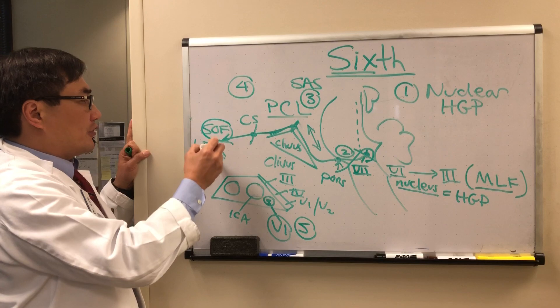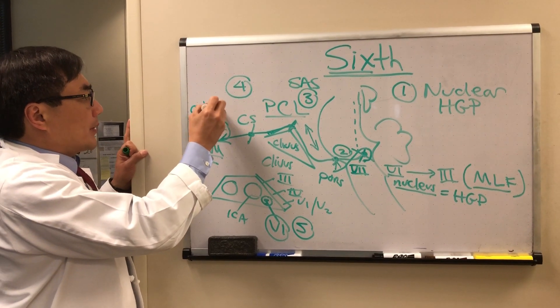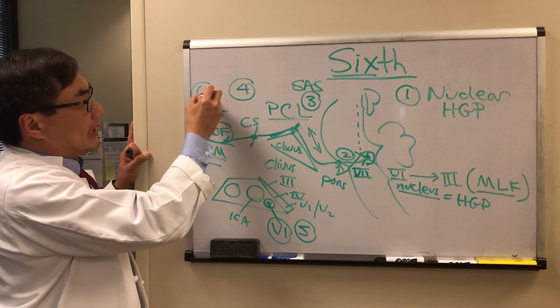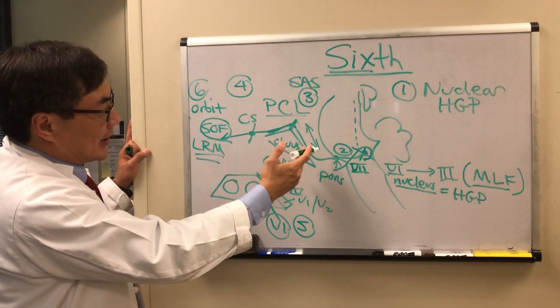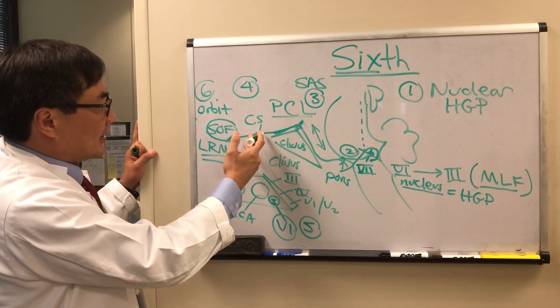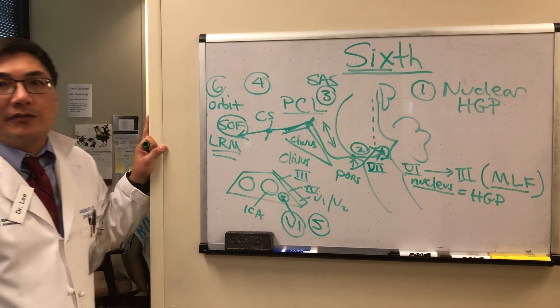And then finally through the superior orbital fissure to the orbit. So if you just knew the anatomy of six, you would know the six syndromes: nucleus, fascicle, subarachnoid space, clivus, cavernous sinus, orbit/superior orbital fissure.